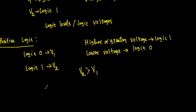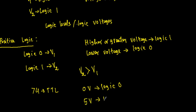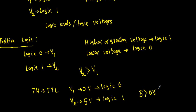In a 74 TTL series, we use 0 volt to specify logic zero and 5 volt to represent logic one. Let's say I denote this voltage with V2 and this voltage with V1. Here it is obvious that 5 volt is greater than 0 volt — the higher voltage represents logic one and the lower voltage represents logic zero.